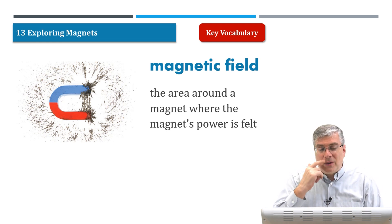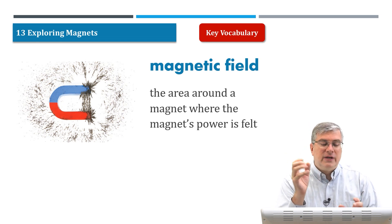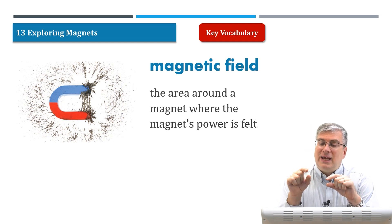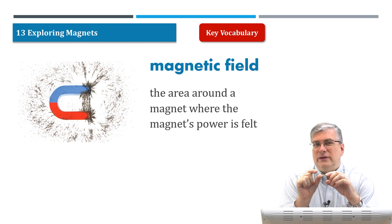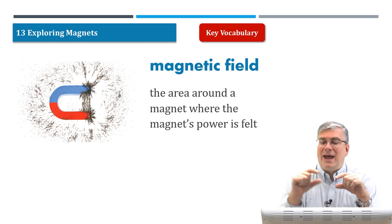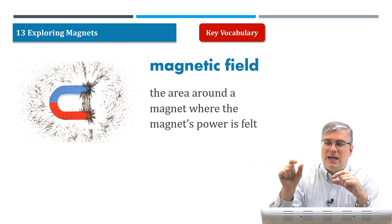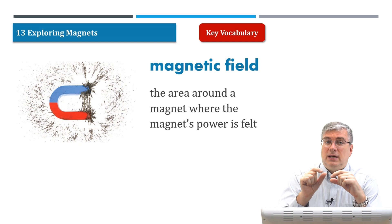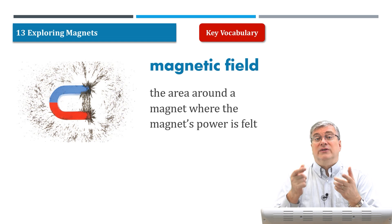A magnetic field isn't very large. For huge objects, it is. But for a regular magnet, it doesn't take a long distance to get out of the magnetic field, to get away from the area where the magnet's power is felt. The power of a magnet, the area, is very small — not very large. So you notice that if you have two magnets and you separate them, there's nothing going on between them. But the closer you get, you have to get pretty close for that magnetic field to show itself or to have some type of action.